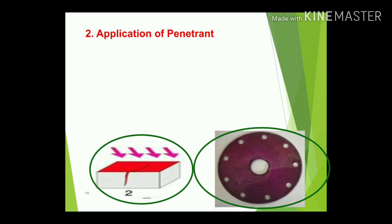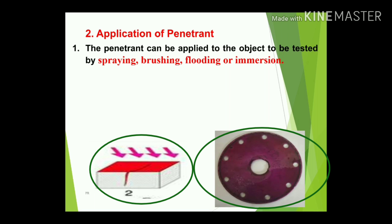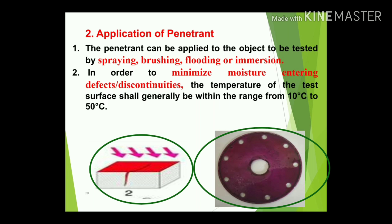The second step is application of the penetrant, which is generally red in color. Using a spray or brush, apply it onto the clean surface — by spraying, brushing, flooding, or immersion. To minimize moisture entering defects, the temperature of the test surface should generally be within the range of 10°C to 50°C. After 15 to 20 minutes, the liquid penetrant penetrates into the irregularities or cracks.